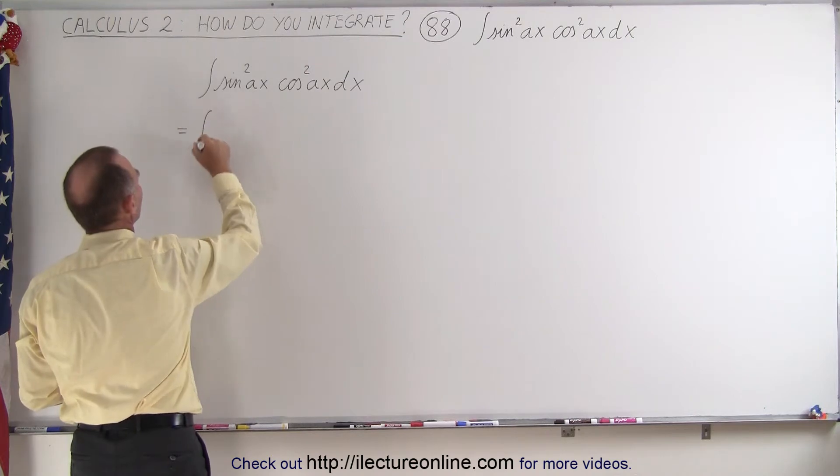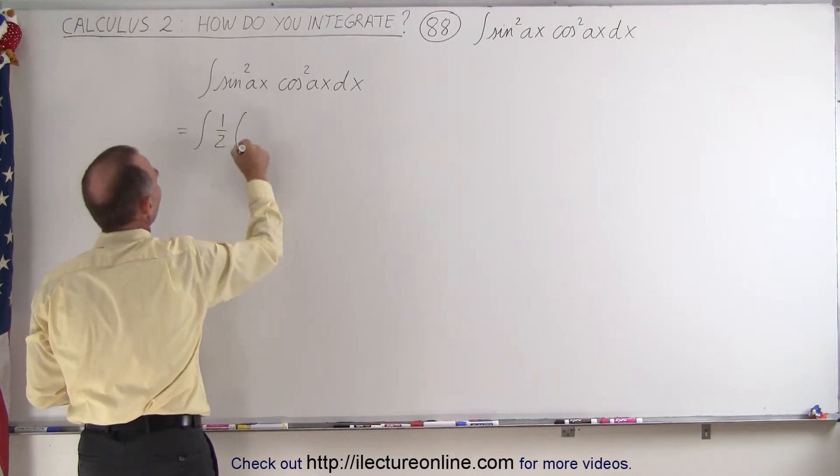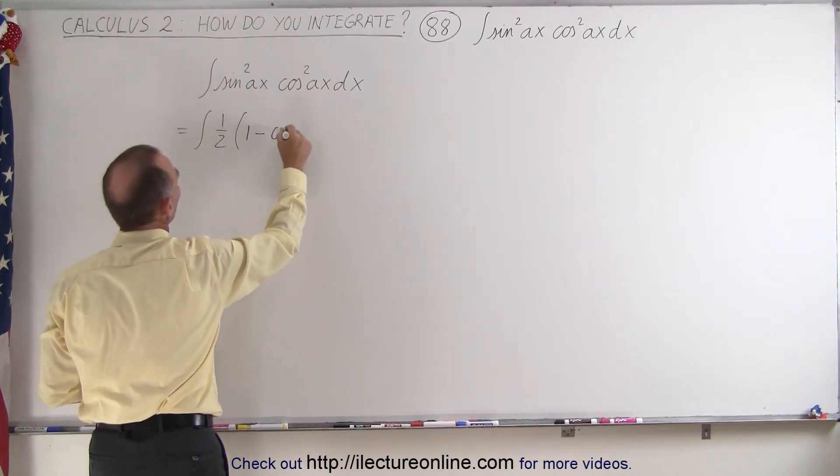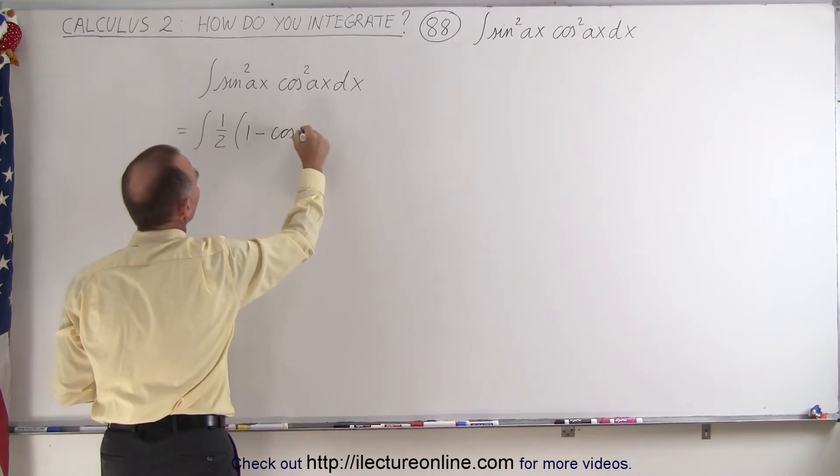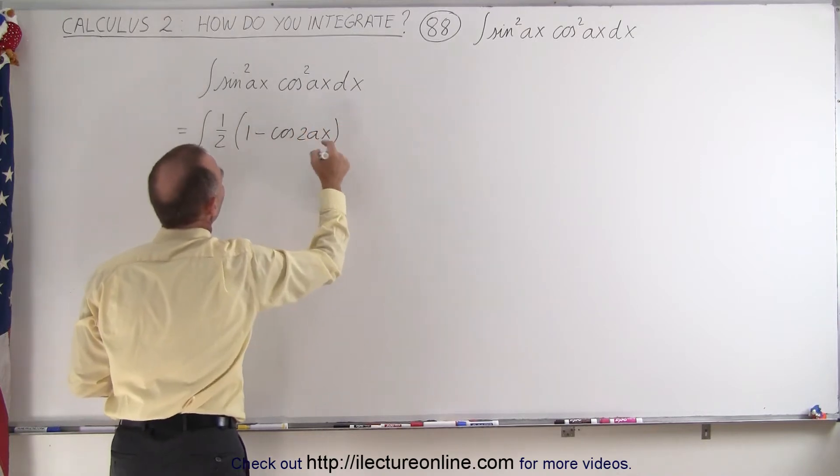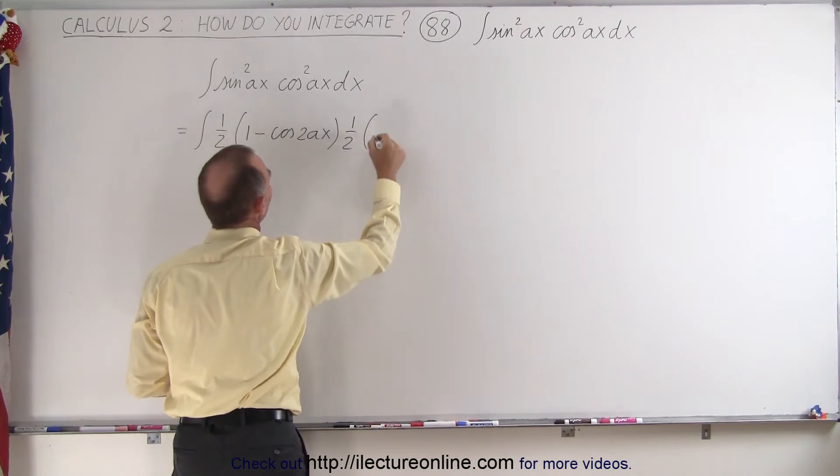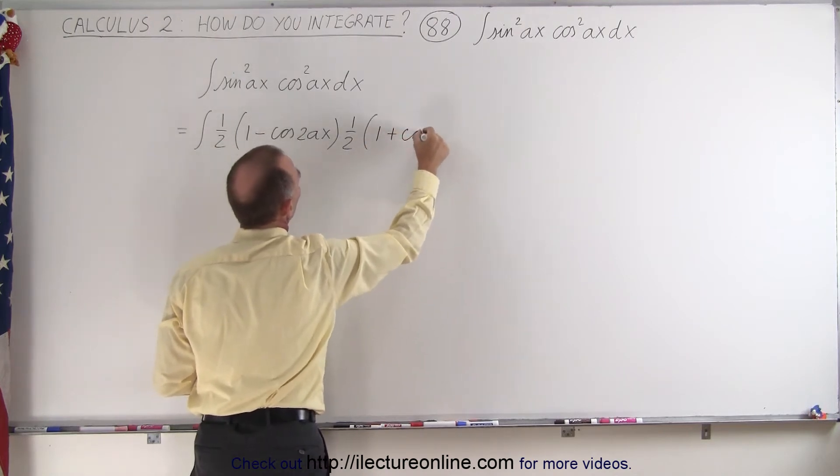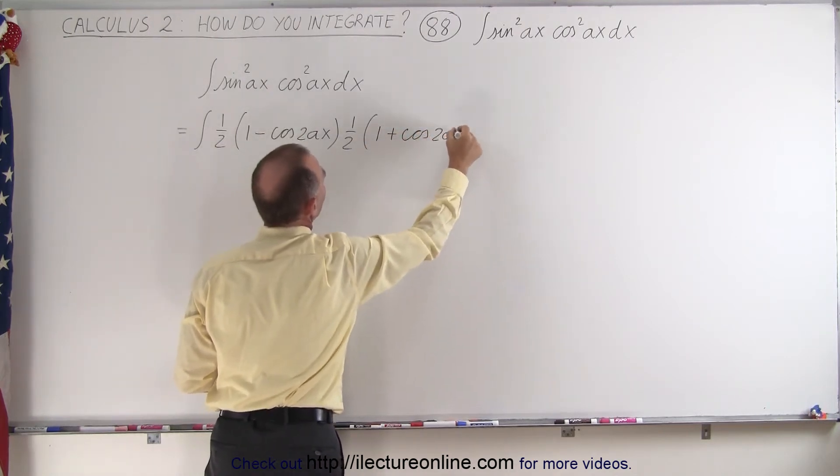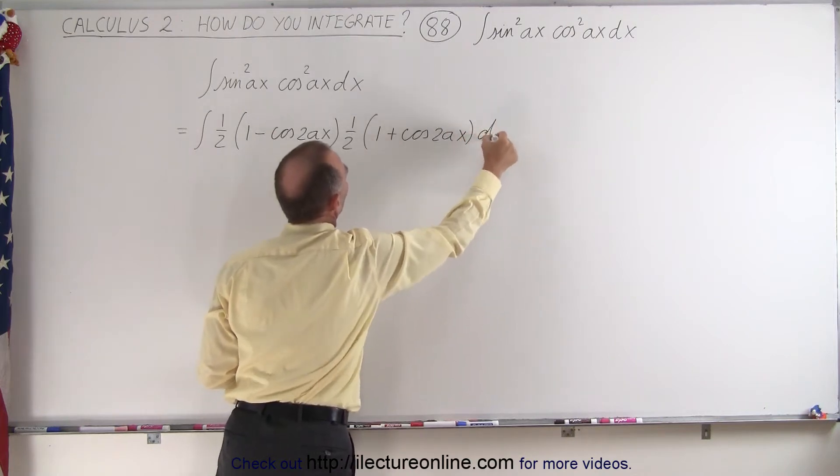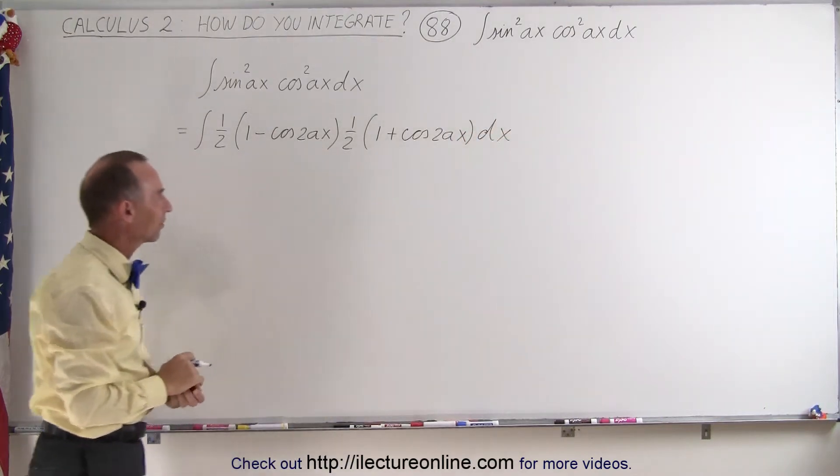This is equal to the integral of 1 half times 1 minus the cosine of twice the angle, 2Ax, and then this can be replaced by 1 half times 1 plus the cosine of twice the angle, 2Ax, and we have the dx there.